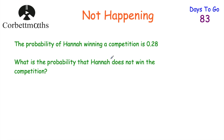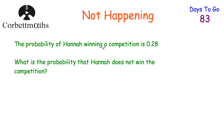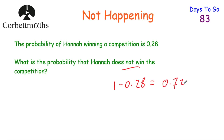Now let's look at the probability of something not happening. The probability of Hannah winning a competition is 0.28. Because she can either win or not win, these two probabilities must add to one. So the probability of Hannah not winning is 1 minus 0.28, which equals 0.72. When you want to find the probability of something not happening, you just do 1 take away the probability of it happening.